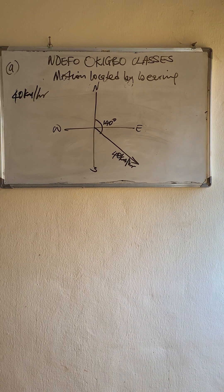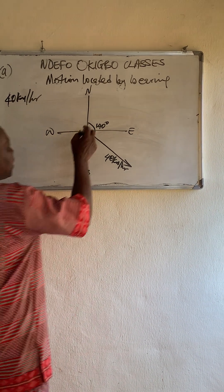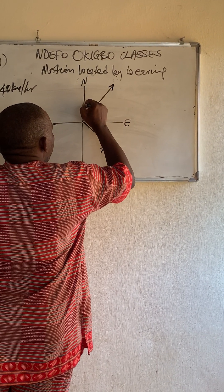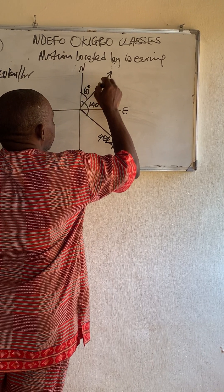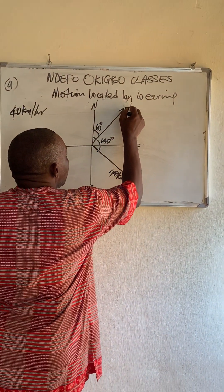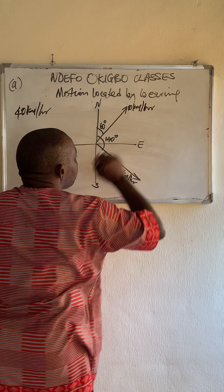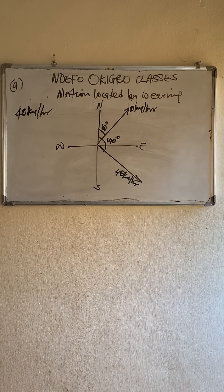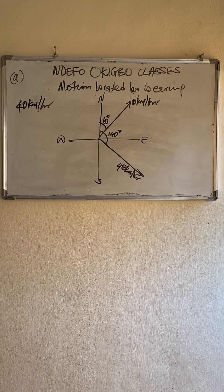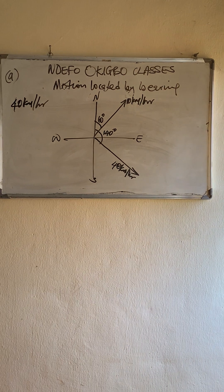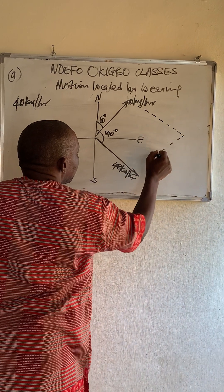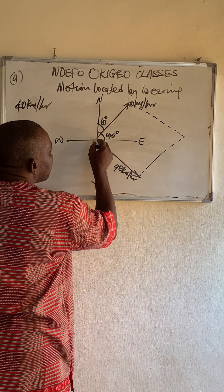The wind blows at 10 kilometers per hour. To get the resultant — that is simple. If I go with this, to get the resultant from here.